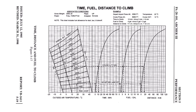On the chart, find the outside air temperature of 22 degrees and draw a vertical line straight up. Where that line crosses the 5,000 foot pressure altitude line, draw a horizontal line all the way across the chart. Where the horizontal line crosses the time reference line, draw a vertical line straight down to the time scale. Do the same where the horizontal line crosses the fuel and distance reference lines. Read the results where these vertical lines cross the scale markings. In our case, the time to climb from sea level to 5,000 feet is 10 minutes, fuel used is 4 gallons, and distance from the airport is 15 nautical miles.